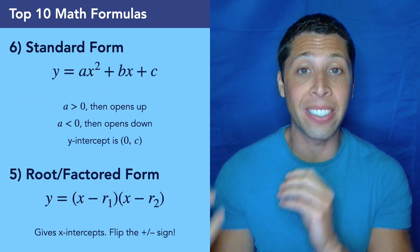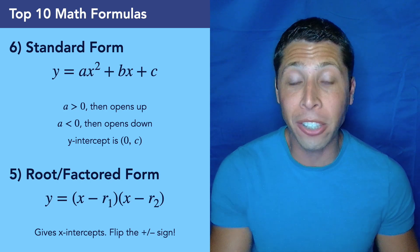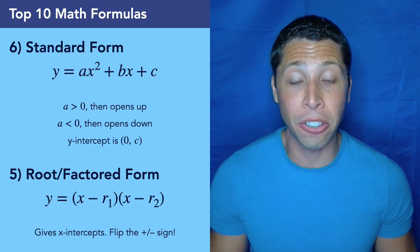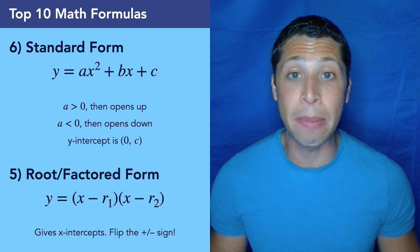Number 6 and number 5 are related, we've got the standard form of a quadratic that tells us the y-intercept, and the root form that tells us the x-intercepts, and we need to be able to move between them really easily by factoring and foiling.